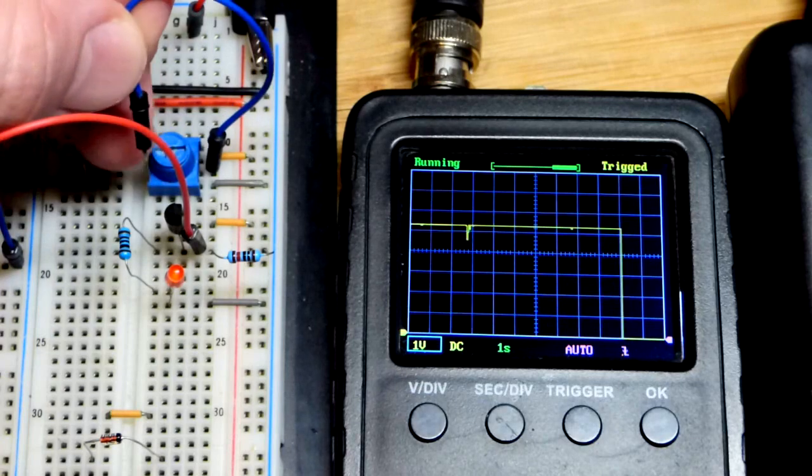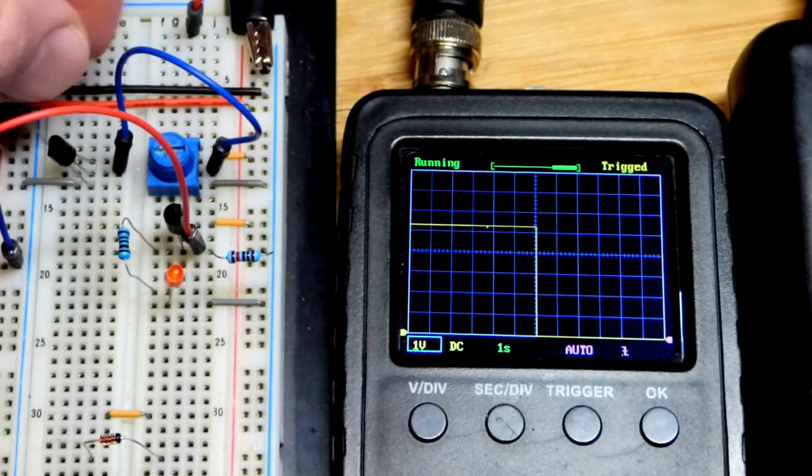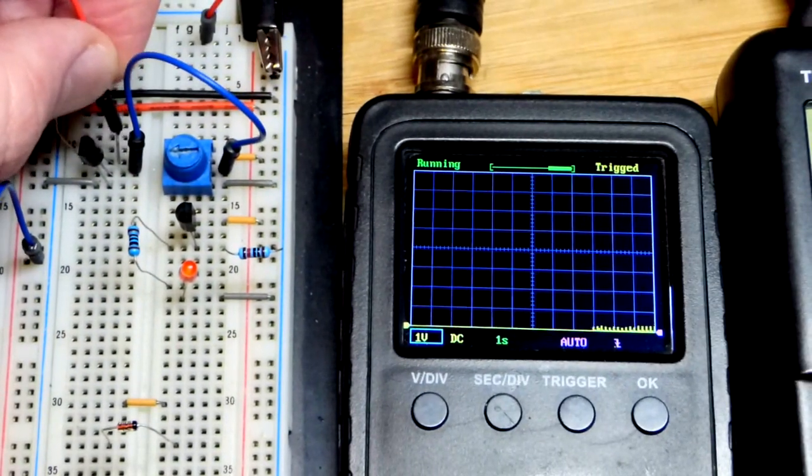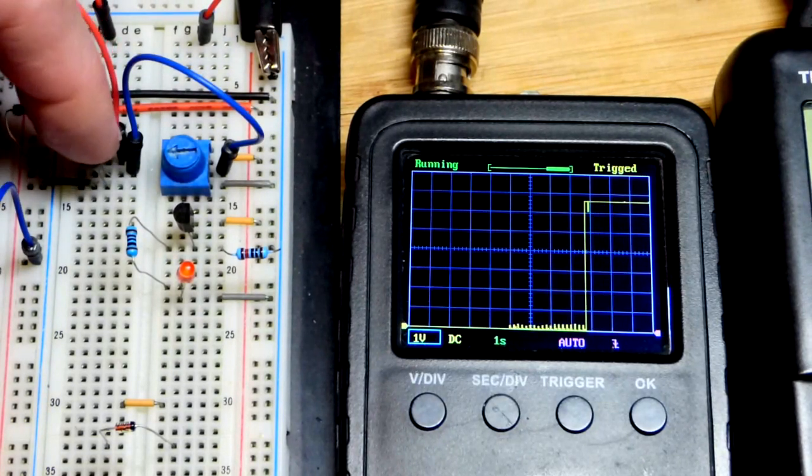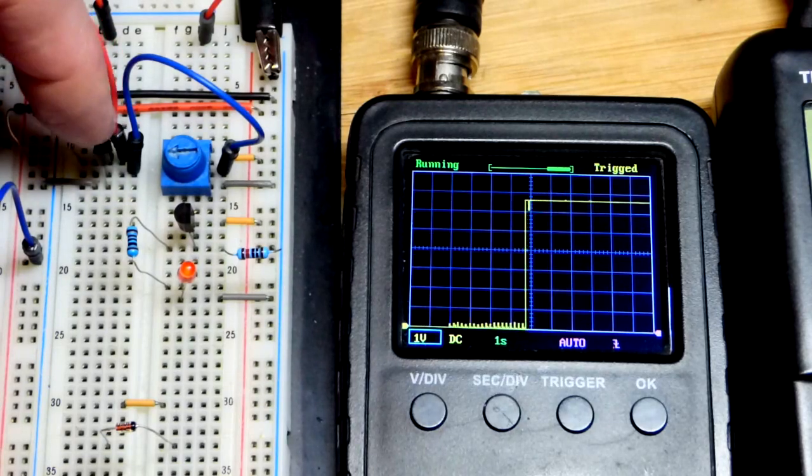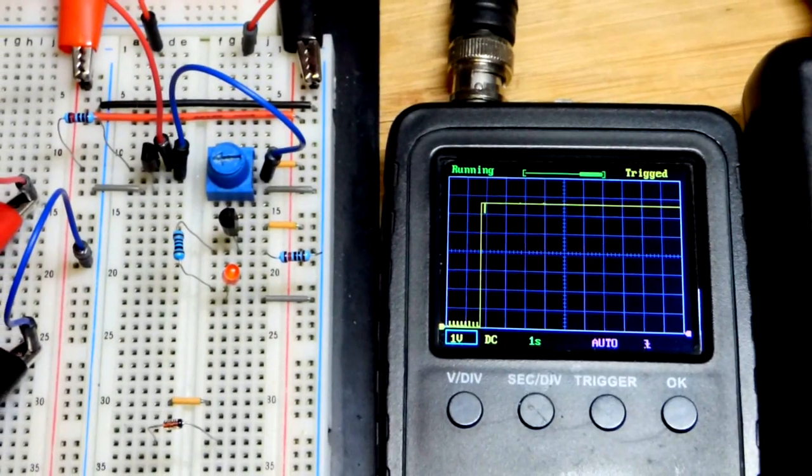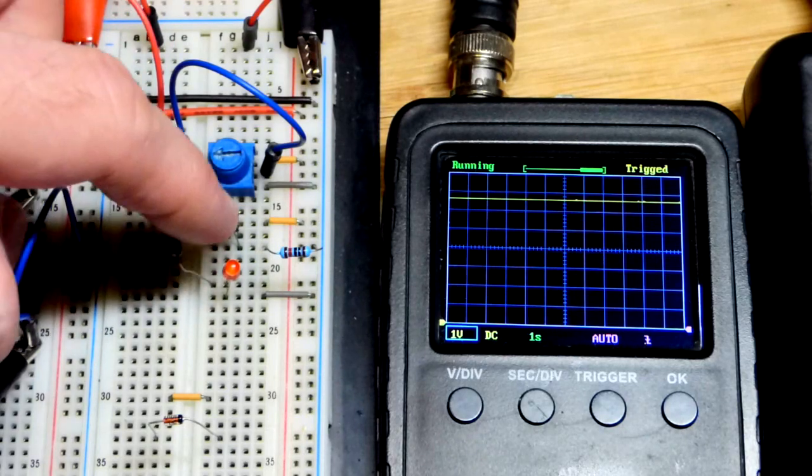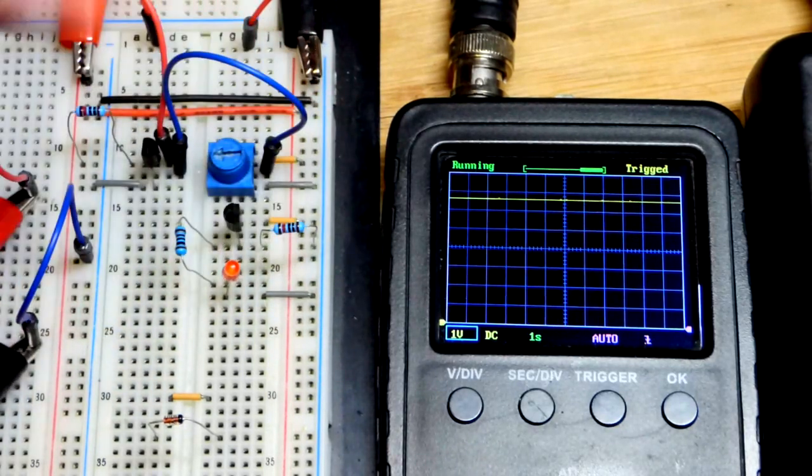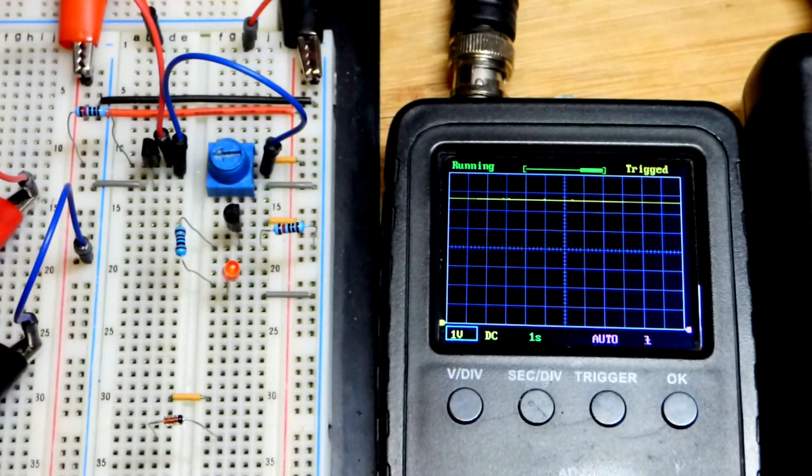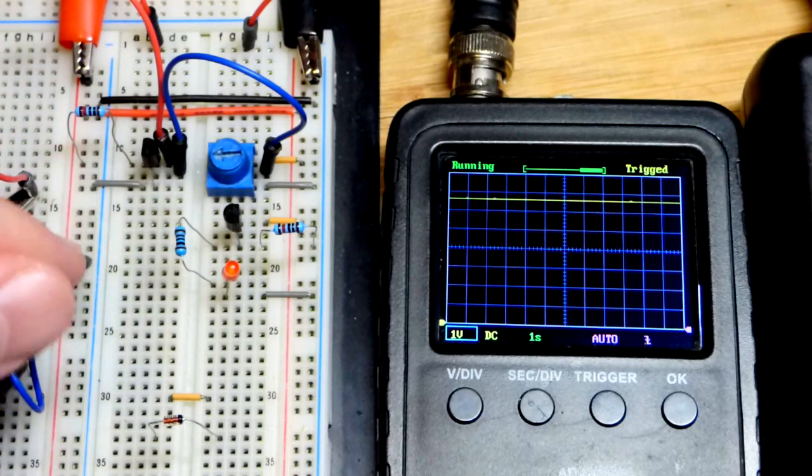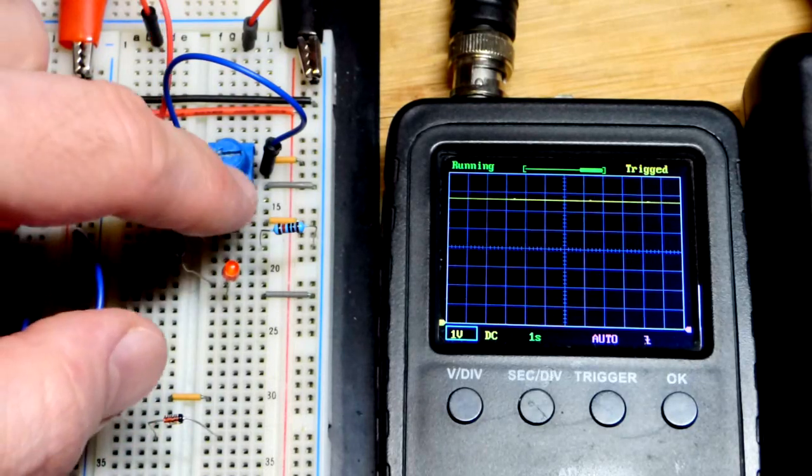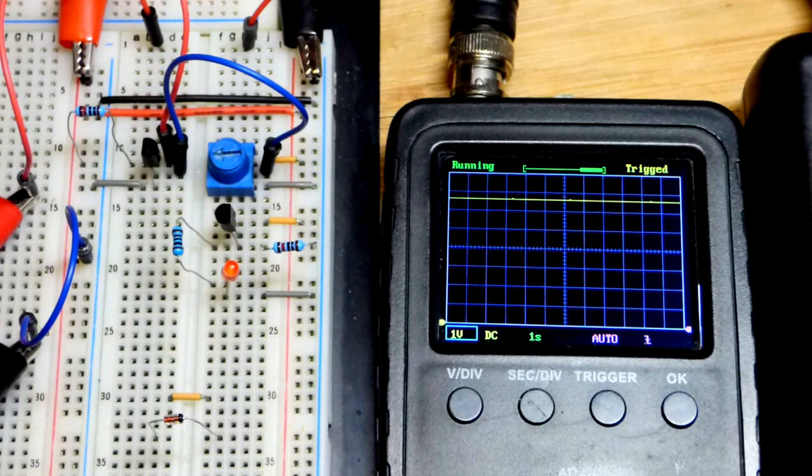We can't do that with the NPN bipolar junction transistor—we're going to lose about 0.6 volts. So what I'm going to do is put the output of the trim pot to the base, the middle pin, of a PNP bipolar junction transistor. It's opposite polarity of the NPN and facing the other way. The emitter is on top because it's facing the other way, and the 10,000 ohm resistor is coming from the positive supply to the emitter.